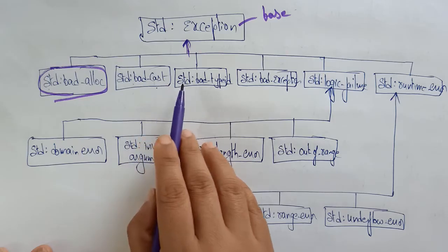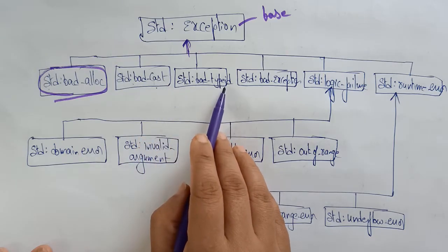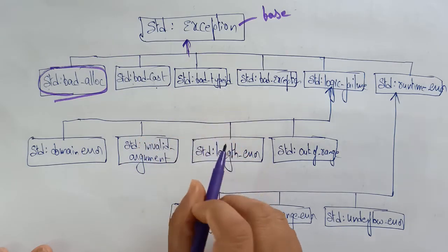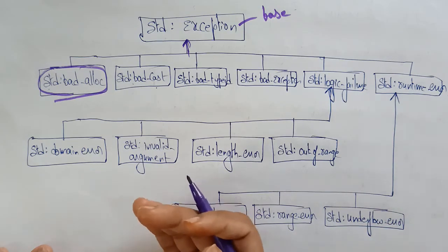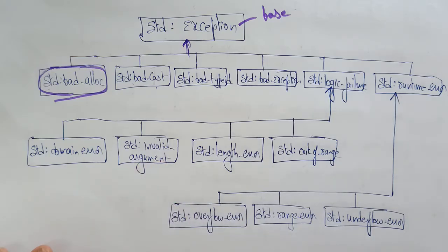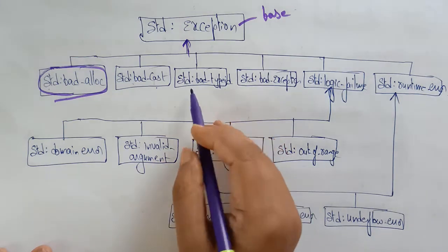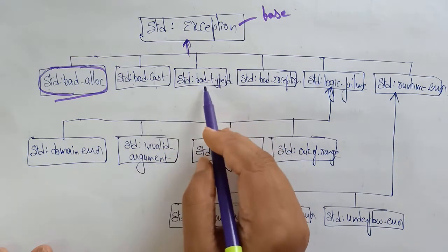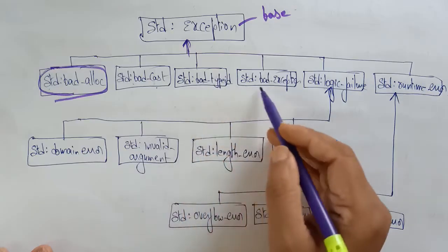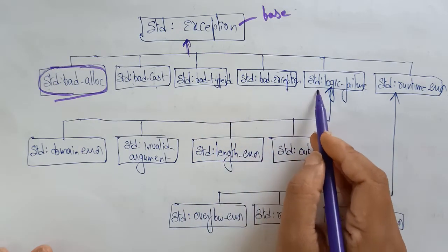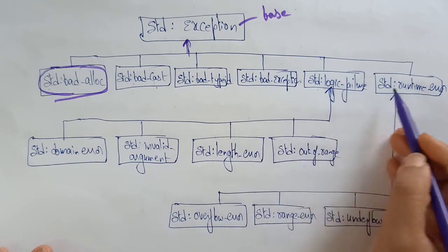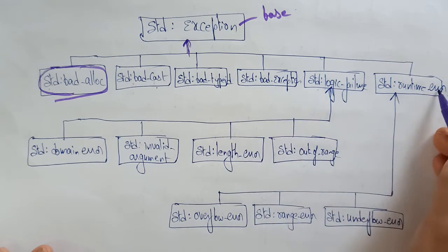std::bad_cast, std::bad_typeid — sometimes by mistake we give different IDs, declared with one data type but used in a different way, so that throws a type ID exception. Then std::bad_exception. And std::logic_failure and std::runtime_error will also be there.